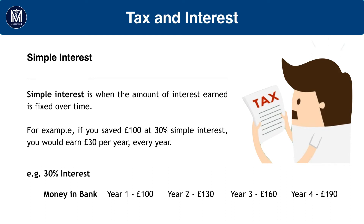So firstly, what's simple interest? Simple interest is when the amount of interest earned is fixed over time. For example, let's say we put £100 into a bank and we get 30% simple interest. 30% of 100 is £30. So after year one we'll have £130, at the end of year two we'll have £160, and after year three we'll have £190. The interest earned year on year is still £30 — it's still 30% of the original investment of £100.